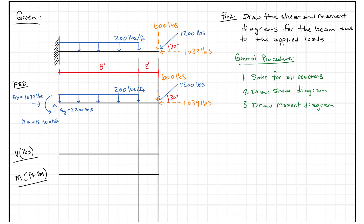We're going to jump right in and solve a problem where we're given a cantilever beam with a uniformly applied load and a concentrated force. This concentrated force is at an angle, so we have a vertical component and a horizontal component. In a previous video, we've already solved all the reactions. Here we have our vertical component, horizontal component, uniformly distributed load, and our reactions at the rigid support — a vertical force, a moment, and a horizontal force at point A. We're going to jump right in to the shear diagram.